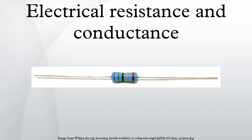Static and differential resistance: Many electrical elements, such as diodes and batteries, do not satisfy Ohm's law. These are called non-ohmic or non-linear, and are characterized by an I–V curve which is not a straight line through the origin. Resistance and conductance can still be defined for non-ohmic elements. However, unlike ohmic resistance, non-linear resistance is not constant but varies with the voltage or current through the device — its operating point. There are two types. Static resistance corresponds to the usual definition of resistance: the voltage divided by the current. It is the slope of the line, or chord, from the origin through the point on the curve.